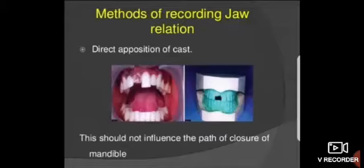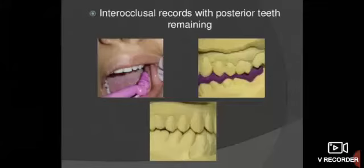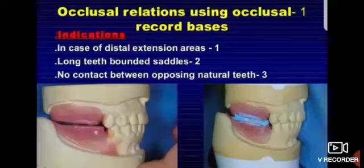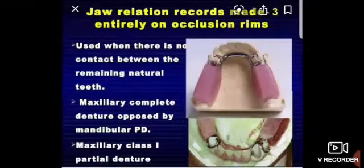أول طريقة هي direct opposition of the cast، أو بسموها hand articulation. تاني طريقة inter-occlusal record with posterior teeth remaining. وكمان عندنا occlusal relation using occlusal rim on record base. وآخر طريقة هي jaw relation record مع internally placed occlusal rim.